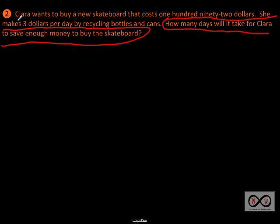How many days will it take for Clara to save enough money to buy the skateboard? And we'll go back to the first sentence. Clara wants to buy a new skateboard that costs $192. There it is, $192. In this case, our number is in word form. And let's see, she makes $3 per, so that was dollars per day. So each day, or per day, she earns $3 for recycling bottles and cans. So there's our number 3 right there in standard form for us. And again, it's a classic division problem.